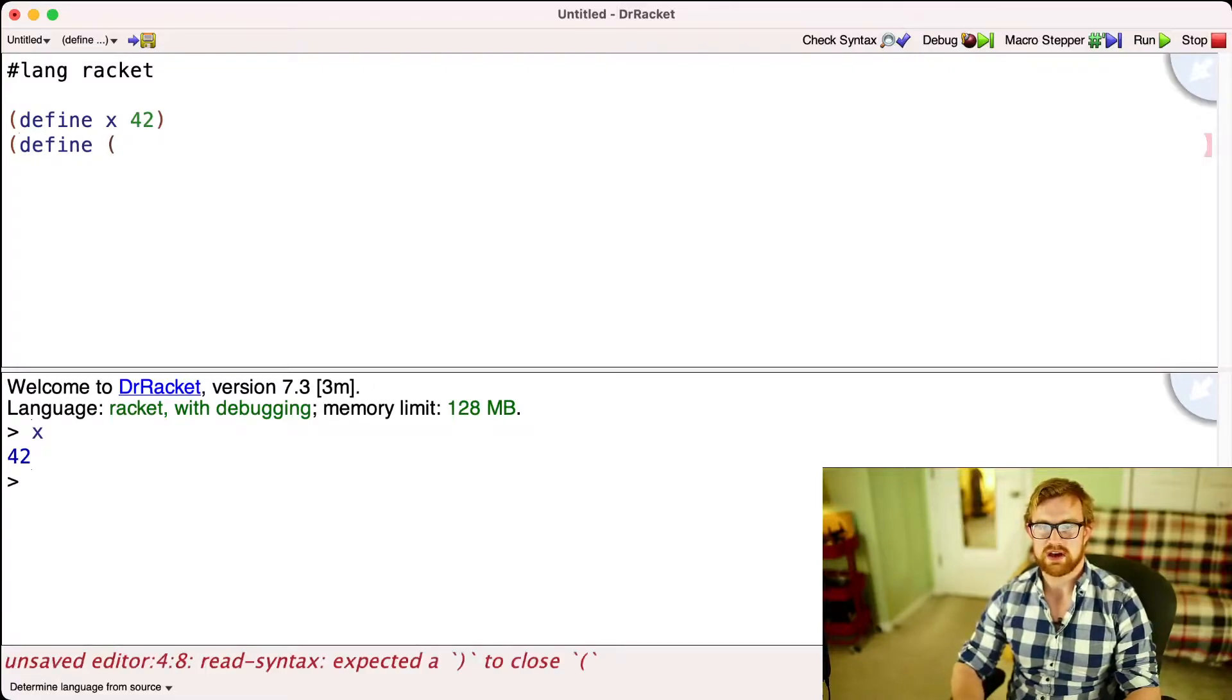Similarly, I can define an identity function foo of x. When I run this piece of code, anything that I put in will come right back out on the other side.